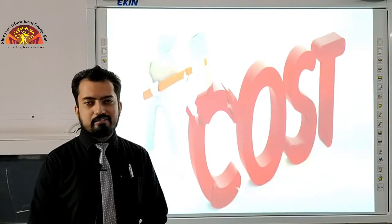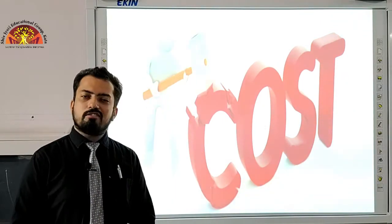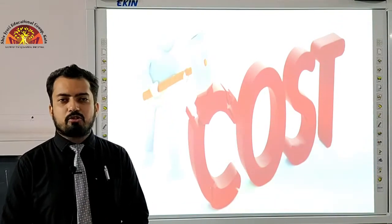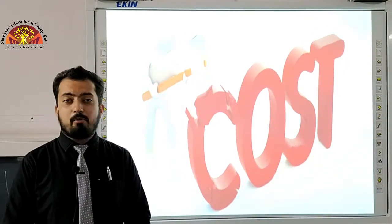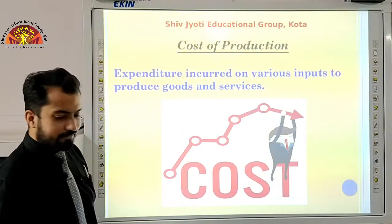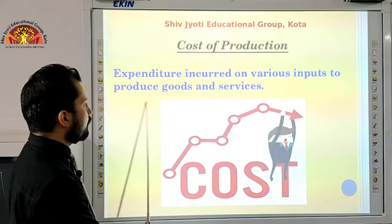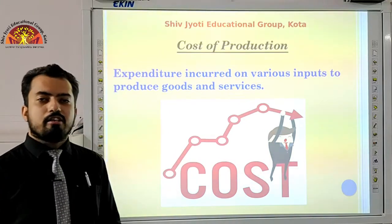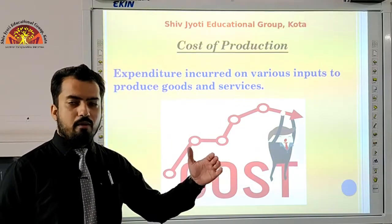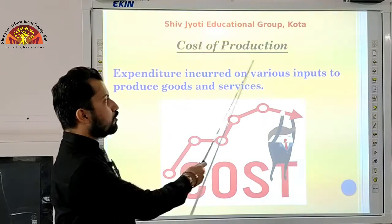In this second part we will discuss cost and the role of production in determining cost. The word 'cost' seems very small, but when we discuss cost in economics, there are many types of it — according to time duration, person-to-person, and so on. The cost of production is incurred on various inputs to produce goods and services. In simple terms, it is the expenditure incurred in converting raw materials into finished goods — that is the cost of production.